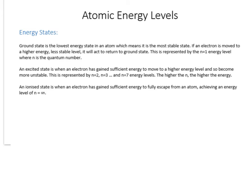The next kind of state is a slightly higher energy state, slightly further away from the nucleus, known as an excited state. The electron gains energy from somewhere and moves to a higher energy level, making it more unstable. These excited states range from n equals 2 to n equals 7, and these quantum numbers match the seven rows on the periodic table.